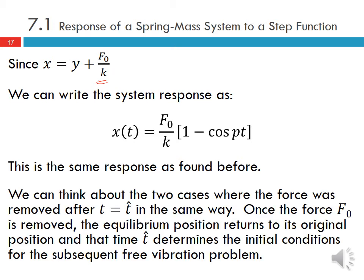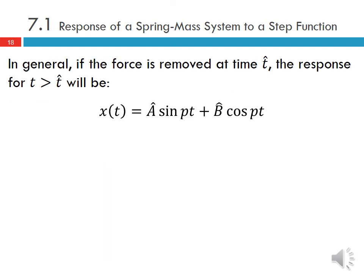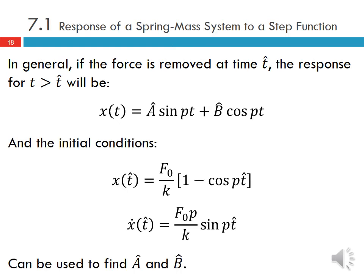We can think about the force-removal cases in the same way. Once F₀ is removed, the equilibrium position returns to its original position, and the time t-hat determines the initial conditions for the subsequent free vibration. In general, if the force is removed at time t-hat, the response for all t greater than t-hat is A-hat sine(pt) plus B-hat cosine(pt), where the initial conditions at t-hat determine A-hat and B-hat.